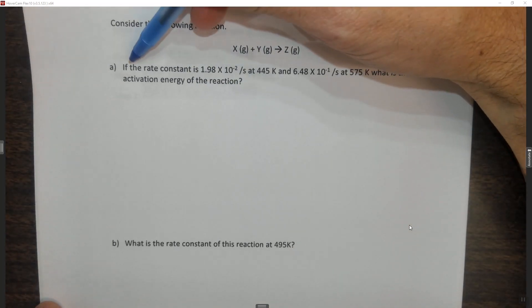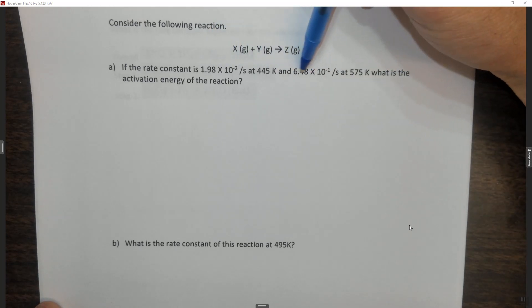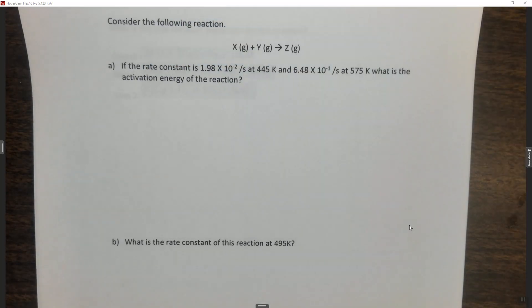The question says, consider the following reaction. If the rate constant is 1.98 times 10 to the minus 2 per second at 445K and 6.48 times 10 to the minus 1 per second at 575K, what is the activation energy of the reaction?